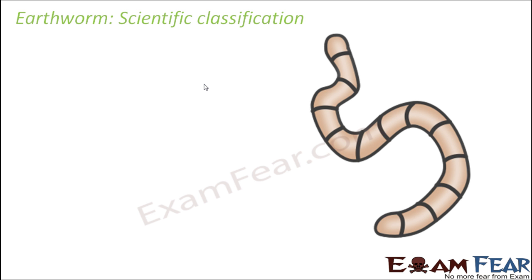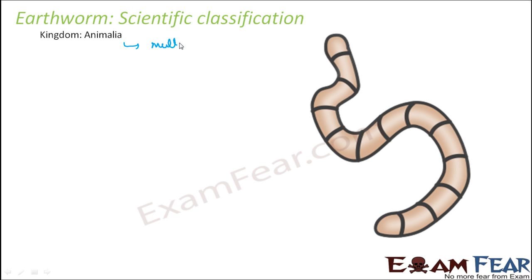Now let's look at the scientific classification of earthworm. The scientific hierarchy starts with kingdom. It belongs to kingdom Animalia. Earthworm, being an animal, belongs to kingdom Animalia. It is also a multicellular and eukaryotic animal. Eukaryotes are organisms where the cells have distinctly bound cell organelles, meaning inside each cell the organelles are well defined and distinct from each other.